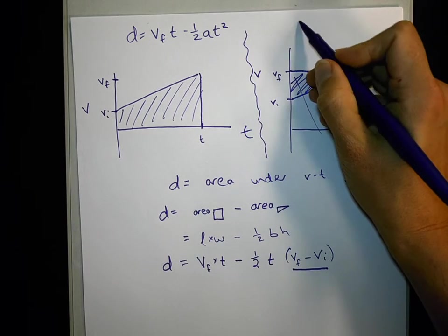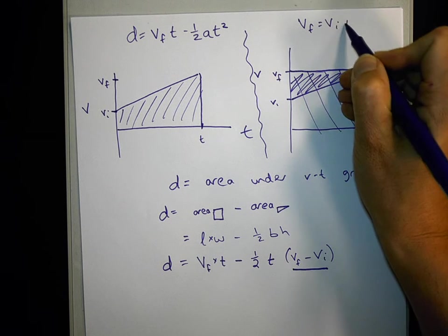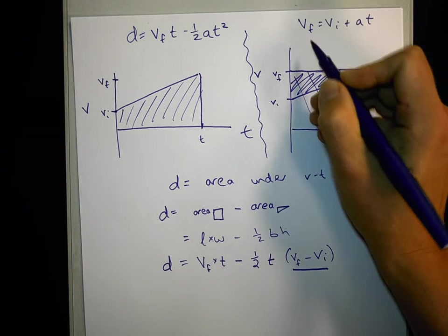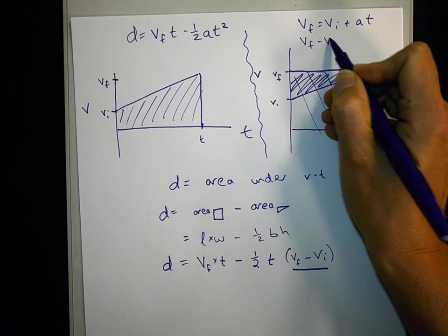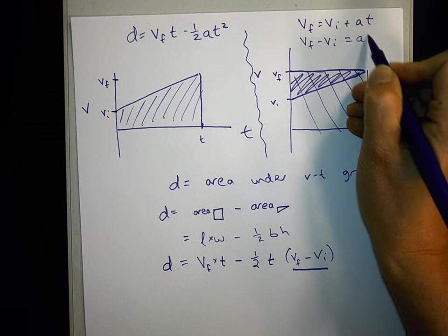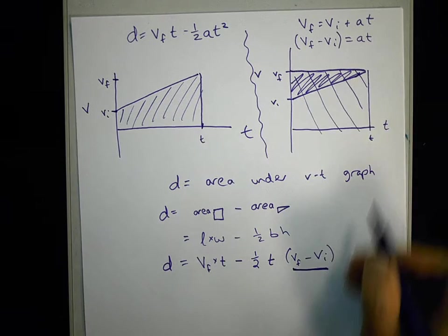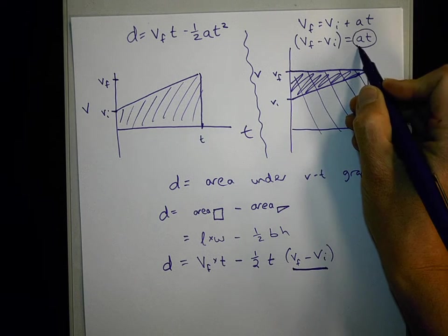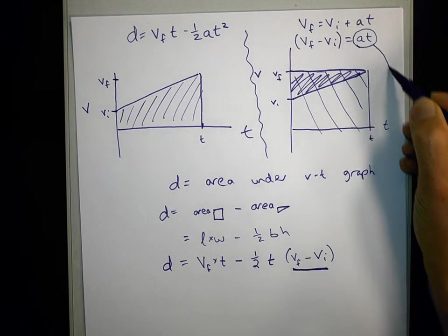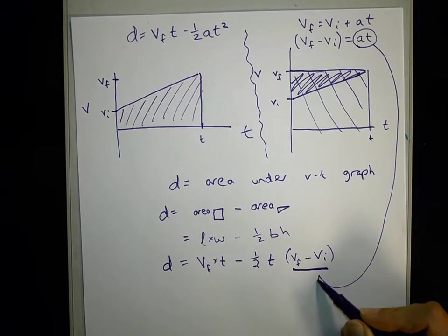So to get the one we're aiming for, we remind ourselves that VF equals VI plus AT. And another way to write that is VF minus VI is AT. So I'm going to sub in VF minus VI. That's this underline part, that's also AT. Let's go ahead and sub AT in for this underline part.